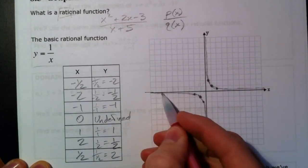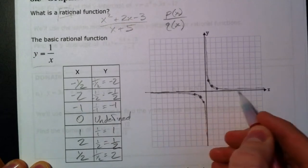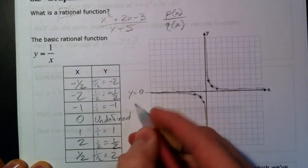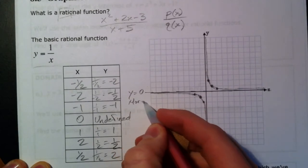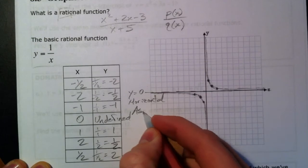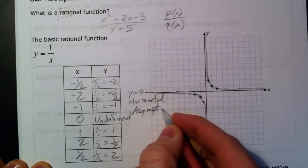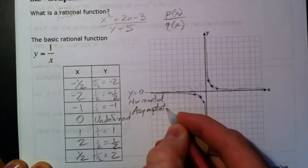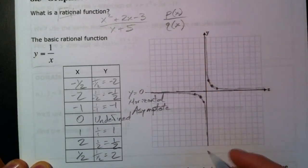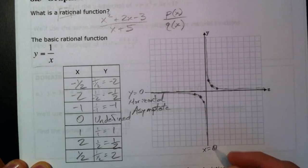This right here, and I'm going to represent it with a dashed line because it's not actually part of our graph, is a horizontal asymptote. Horizontal asymptote. It's got a random P in there, asymptote. And then right here, this is a vertical asymptote at x equals 0.